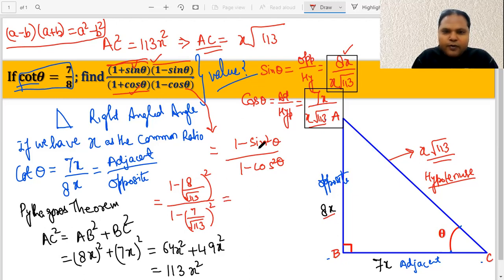Now if we further simplify it, since we have it getting whole squared, √113 will get converted into simple 113, and 8 will become 64. So once we simplify this whole thing, it will look something like this, and similarly the denominator will look something like this.